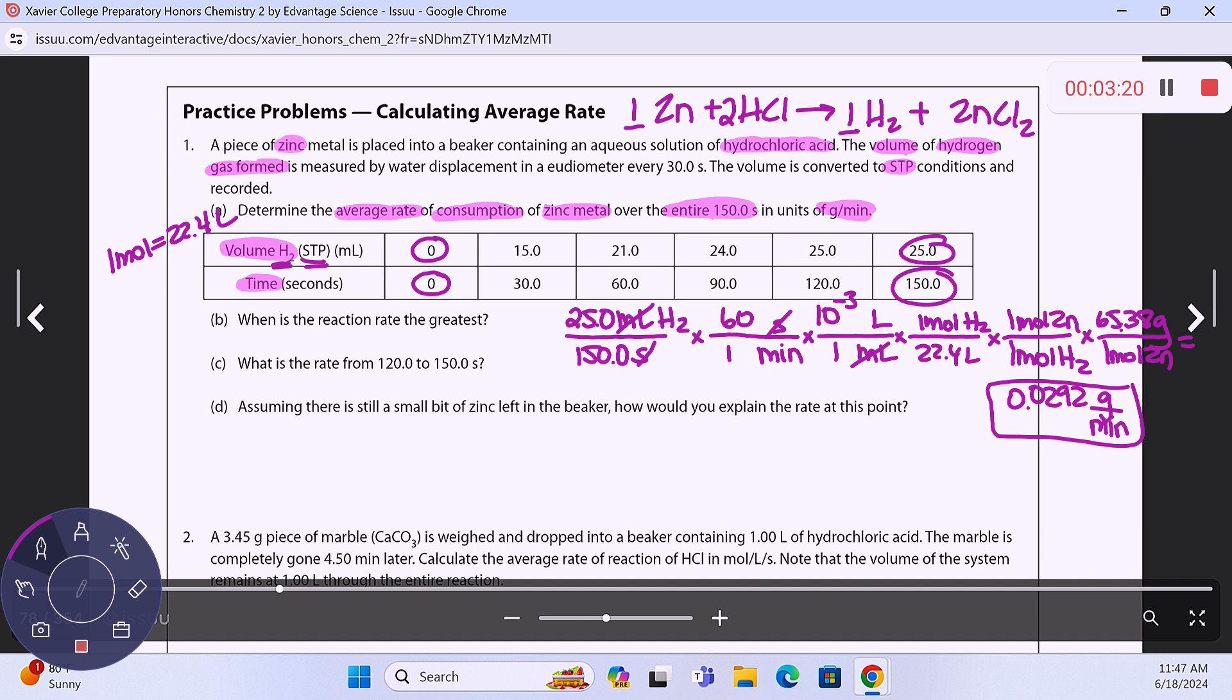And then generally speaking, the reaction rate will probably be the greatest at the beginning, because that's when you have the most amount of reactants present. So if you take a look at the data table, as you're going from 0 to 30 seconds, we're producing 15 milliliters of hydrogen gas. 30 to 60 seconds, you're producing much less - 6 milliliters. 60 to 90 seconds, you're producing 3 milliliters. So you can see how this is progressively going down, and then it doesn't change at all at the very end. So the reaction rate is the greatest between 0 and 30 seconds.